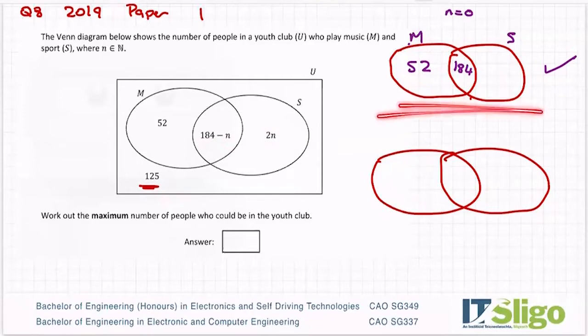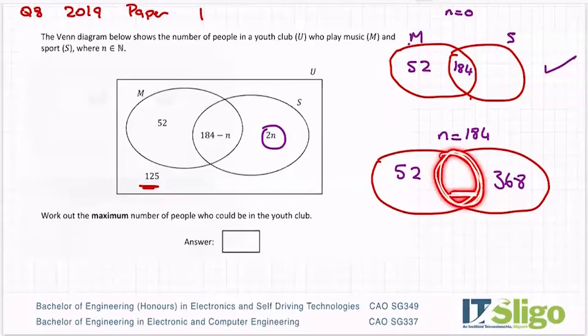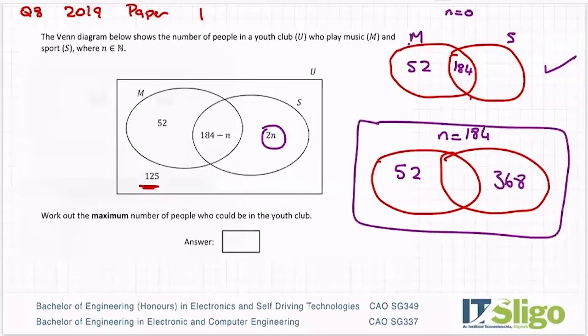You'll often see me drawing the two scenarios here and then I'll answer the question that I'm asked. The other extreme then is when N is the biggest number it could be, and the biggest number it could be is 184. Which leaves nobody here in the intersection because it's 184 minus 184. He's fixed at 52, and out here then you have two times N, so two by 184 is 368. You can see you'll always get the maximum number when the smallest number is in the overlap. I have to put my universal set around that one and put in the 125.